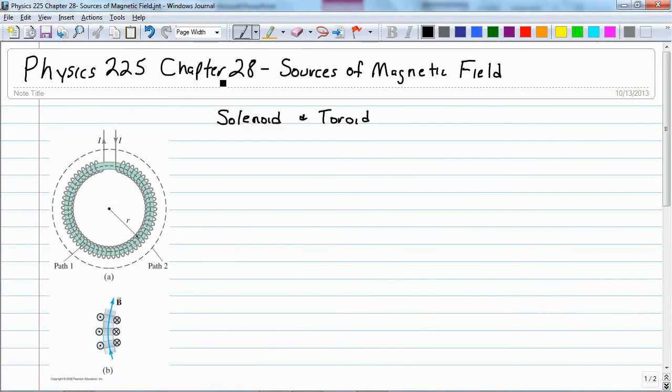A toroid is just a solenoid that's been wrapped around a loop of some kind of frame to hold it. It could be a plastic tubing or it could even be metal itself, but sometimes it's just a plastic tubing.